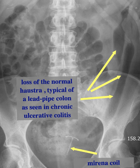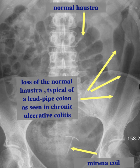Incidentally, you can see a Mirena coil in the pelvis, and you can also see the normal haustra in the more proximal colon, which seems to be spared from the inflammatory process in this patient with chronic colitis of the distal colon.